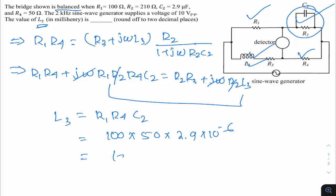Calculating gives L3 = 14.50 mH. This is a standard Maxwell's bridge — using the standard formula or the balance condition both give the same result. It takes about 20 to 30 seconds to answer these questions. So 14.50 mH is the correct answer.